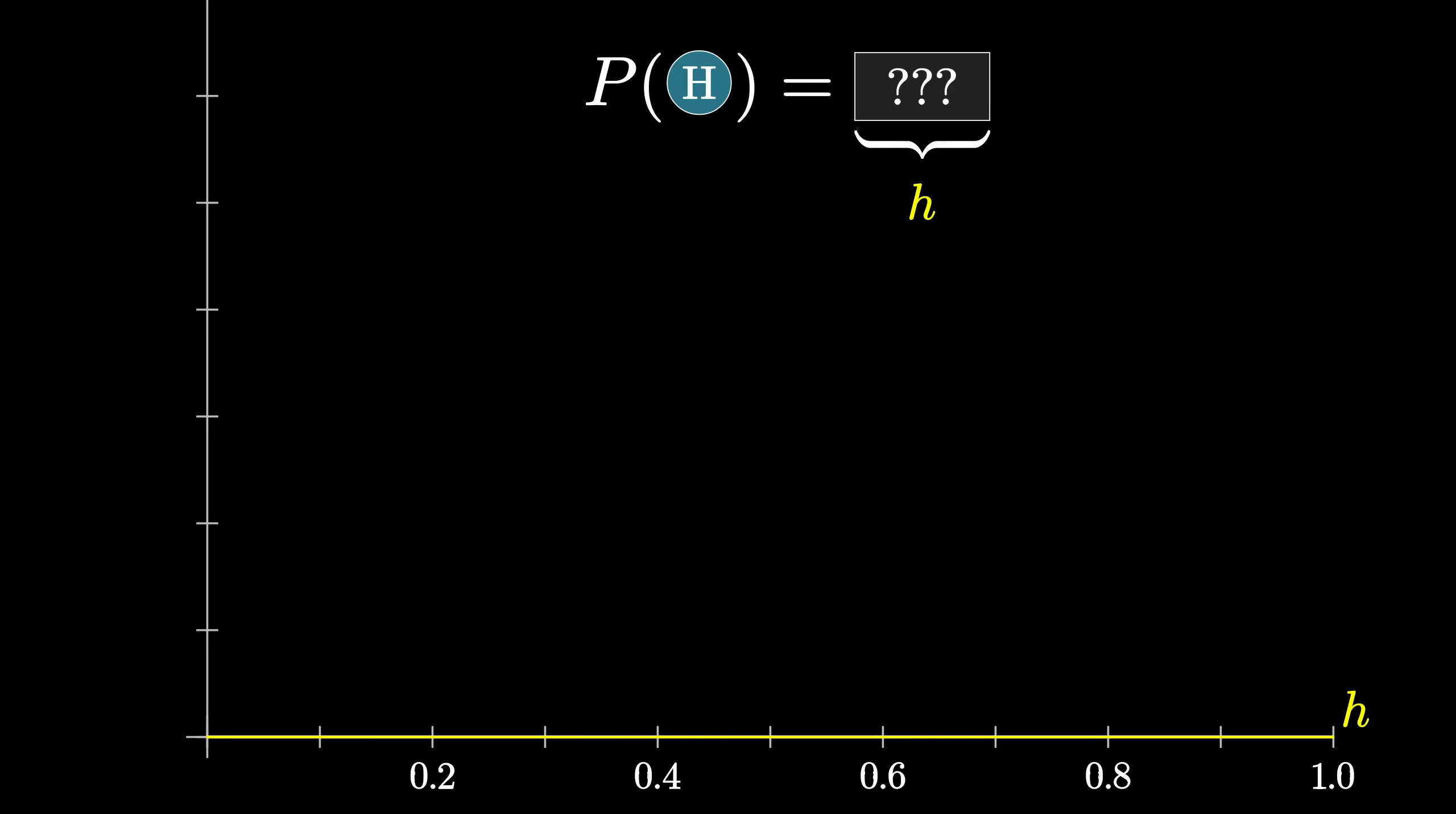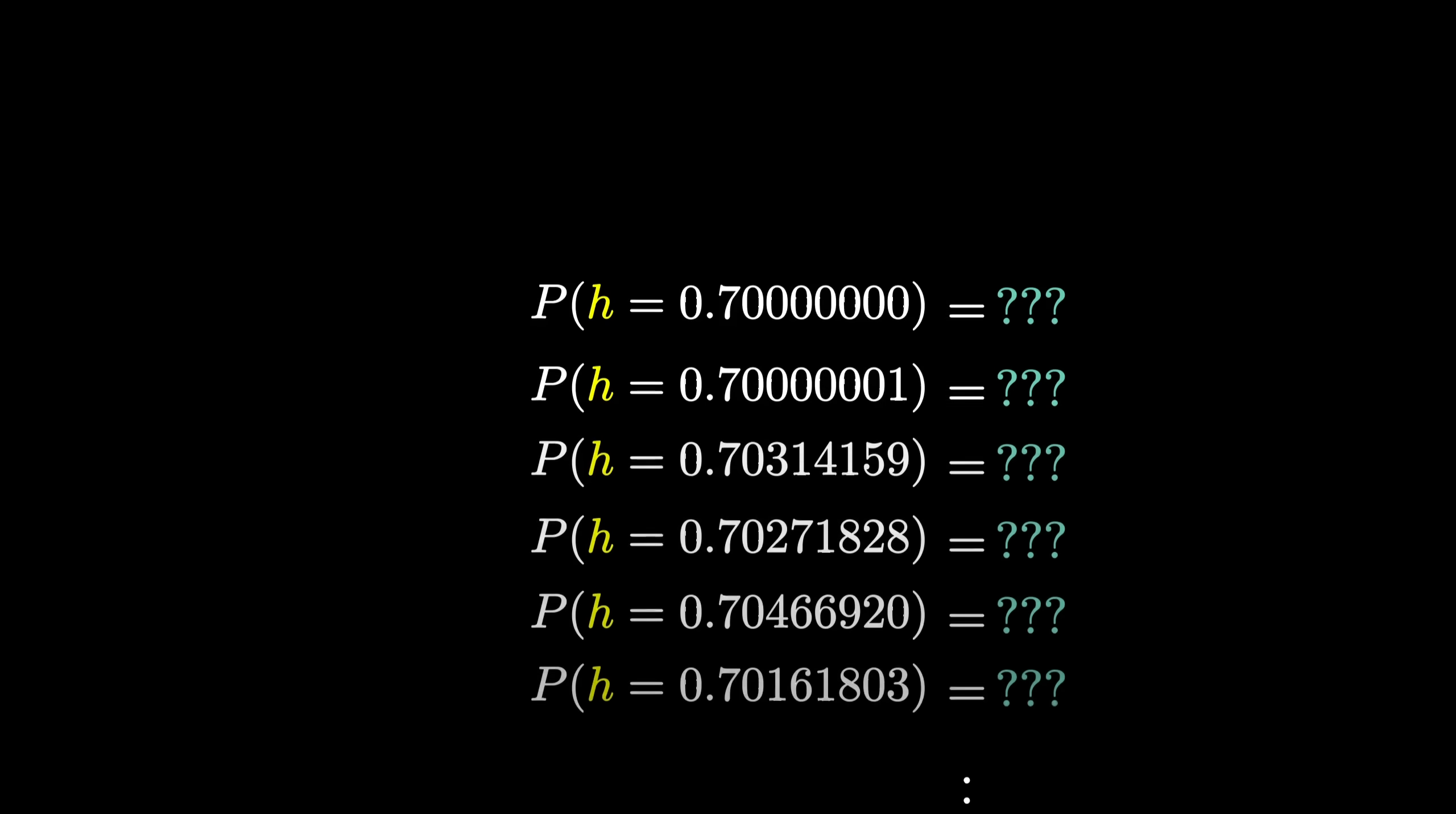So if I ask, hey, what's the probability that H is precisely 0.7, as opposed to say 0.70000001 or any other nearby value?